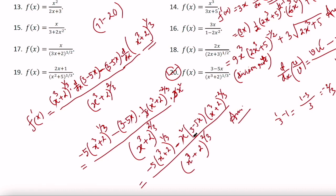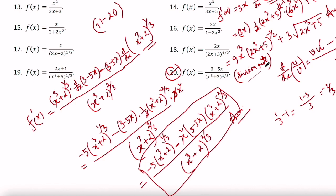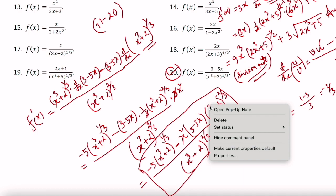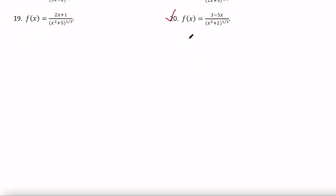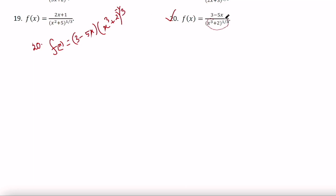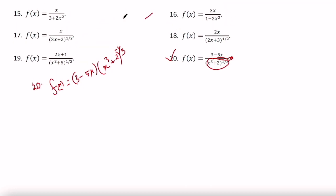You can simplify this further but this answer is also fine. Now let us solve the same problem using product rule. If you don't want to use the division rule, you first need to rewrite f(x): f(x) equals (3 minus 5x) times (x cubed plus 2) to the power minus 1 by 3, by taking the denominator to the numerator and changing the sign of its power. Now you can use product rule because this is a product of two functions.